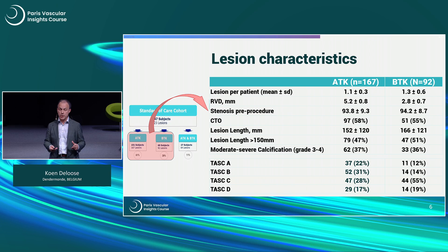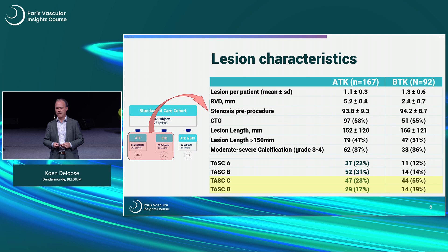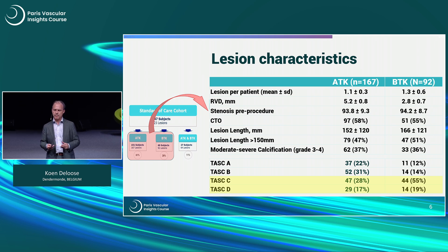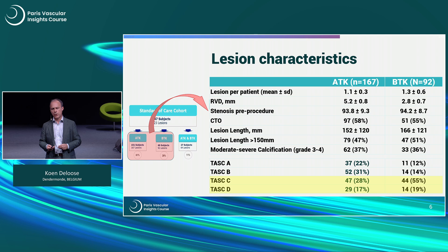Looking at the lesion characteristics, you can see very clearly that not the easiest lesions were enrolled — there were a lot of TASC C and D lesions, mean lesion length around 15–16 cm, and in 60–58% of cases, chronic total occlusions.